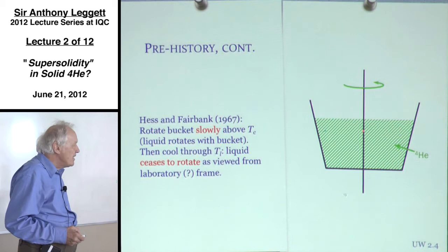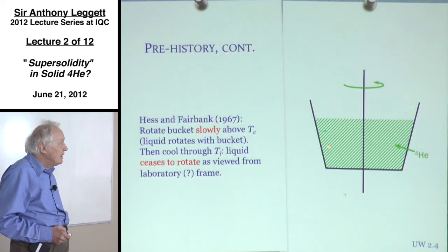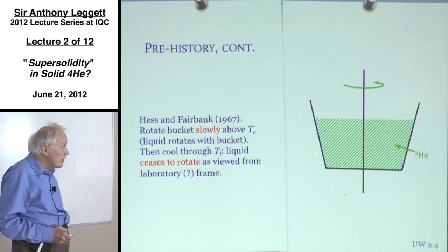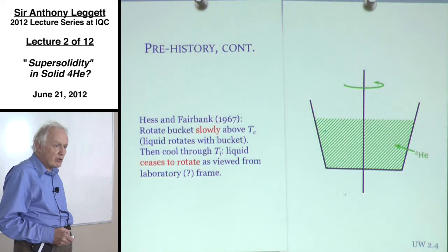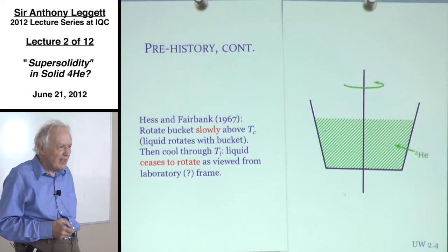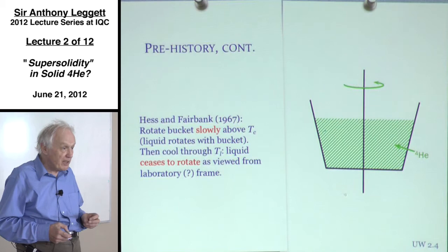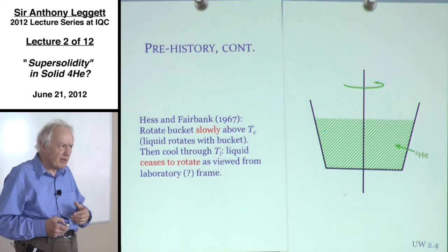What we're going to do is continue to rotate the bucket but cool the liquid across the lambda line into the helium-2 phase. What actually happens is that the liquid, as viewed from the laboratory frame, ceases to rotate — it progressively comes out of rotation with the container. As we cool down towards zero temperature, it will apparently have stopped in the laboratory frame. The general belief, with some supporting experimental evidence, is that at the North Pole the helium would actually be stationary in the frame of the fixed stars, not the terrestrial laboratory.